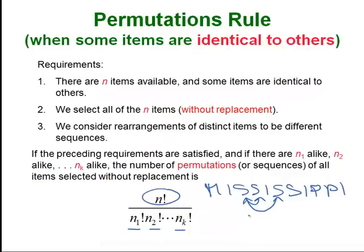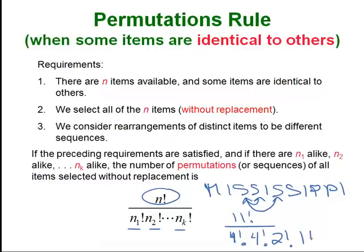When that's the case, the formula is simply n factorial divided by the factorials of each group of repeats. For Mississippi it's 11 factorial over 4 factorial for the S's, 4 factorial for the I's, and 2 factorial for the P's. Technically you'd also have 1 factorial for the M, but 1 factorial is just 1.